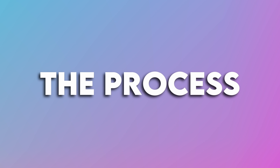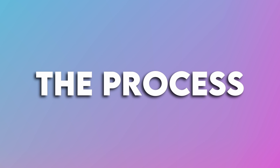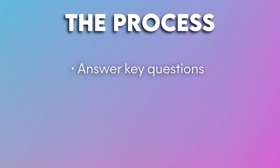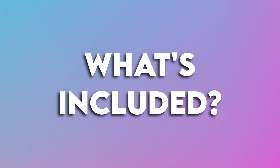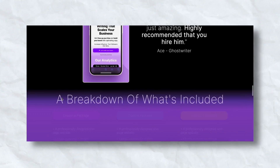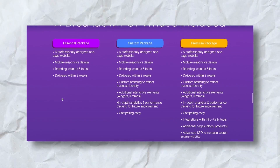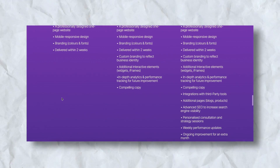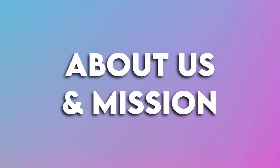After presenting benefits, move on to outlining the process — guide your visitors through a step-by-step journey of what they'll experience. Visitors coming across your service for the first time will want to know more and whether it's worth investing in you. Answer key questions and clearly set out a path from first interaction to last. Once you've outlined the process, highlight what's included in your service. Detail what's in your offer to reinforce its value — for example, I provide an Essential, Custom, and Premium package, with a list of what comes with each.